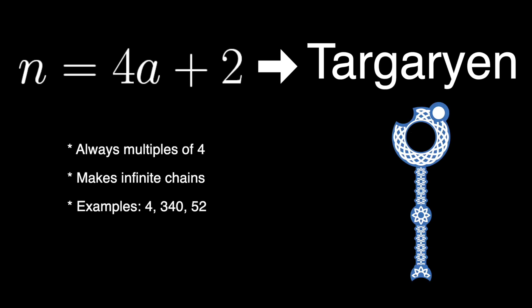Finally, if n is even, but is not a multiple of 4, I call them Targaryen. Oddly enough, even though n is not a multiple of 4, the value of the vertex itself is always a multiple of 4. In fact, if you take any vertex and multiply it by 4, you will get a Targaryen vertex, which means that Targaryen vertices start infinite chains of more Targaryen vertices, a behavior that strikes me as incestuous.